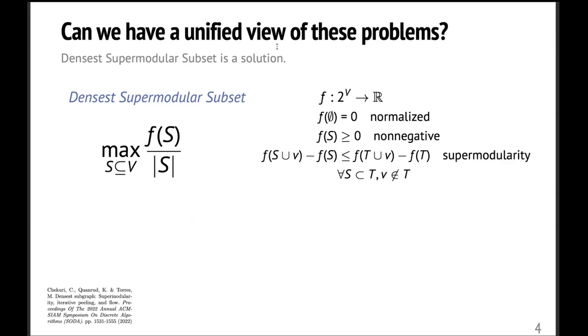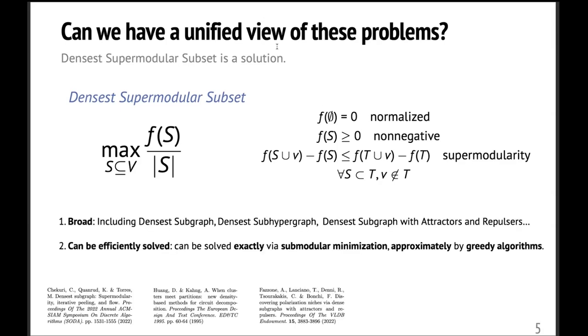And there are two properties of this objective. First, it's super general, so it covers a lot of different variants of densest subgraph. And second, this objective can be efficiently solved. So it can be solved exactly via submodular minimization or approximately by greedy algorithms.